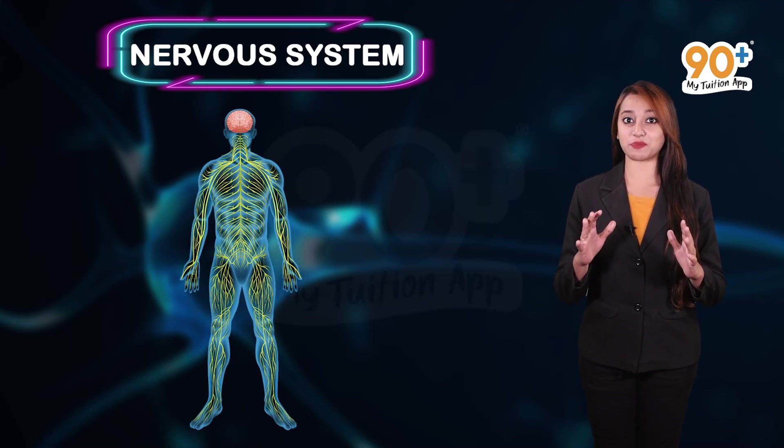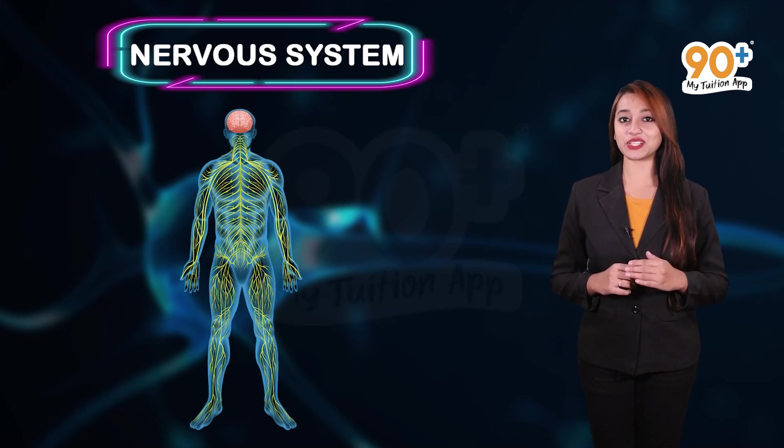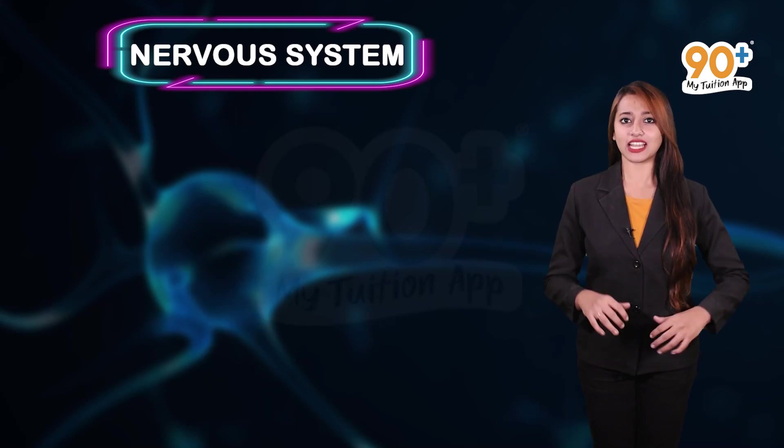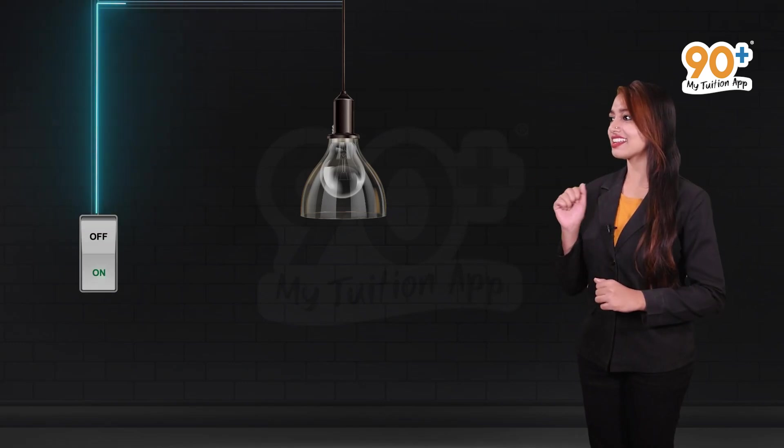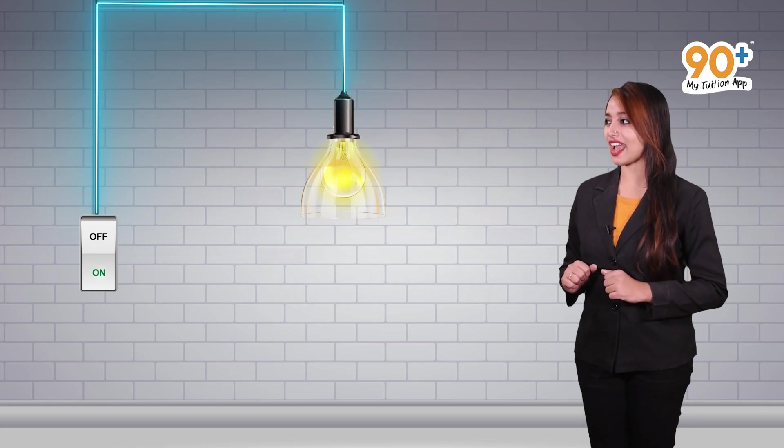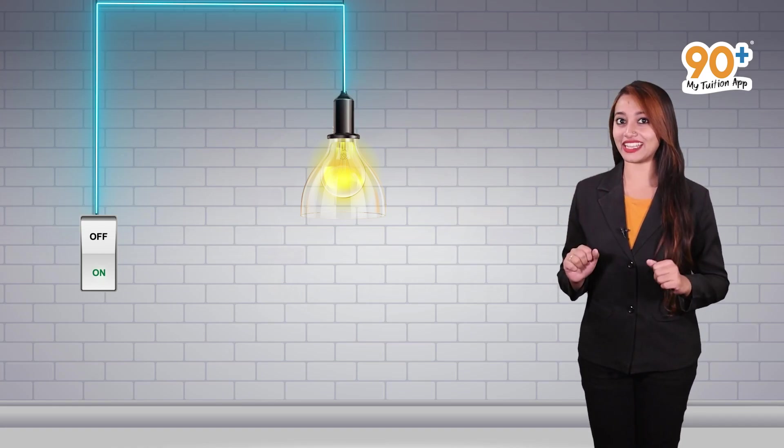The nervous system is responsible for sending and receiving signals which are called impulses. Just like electricity which is carried through the wire that connects the switch and the bulb, the nervous system also carries electric impulses throughout the body.